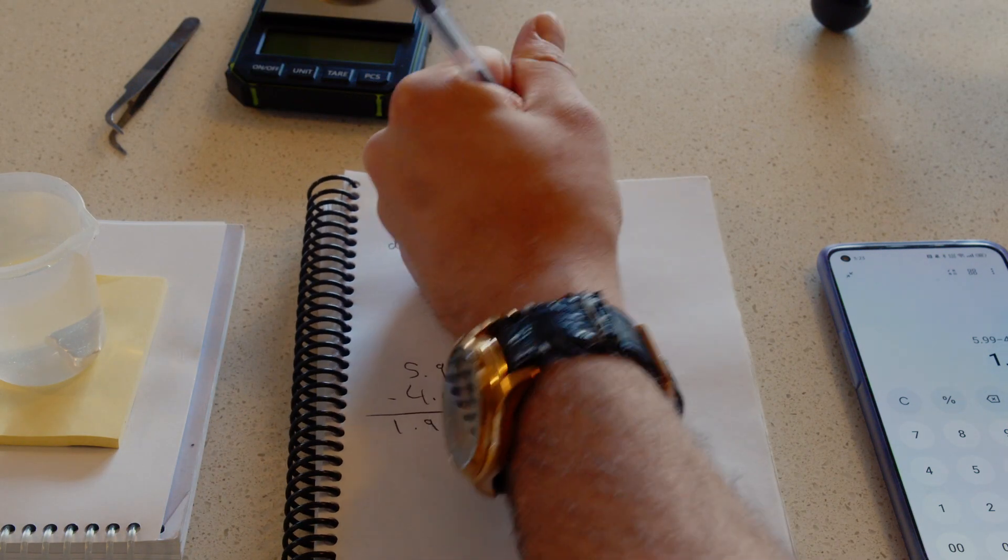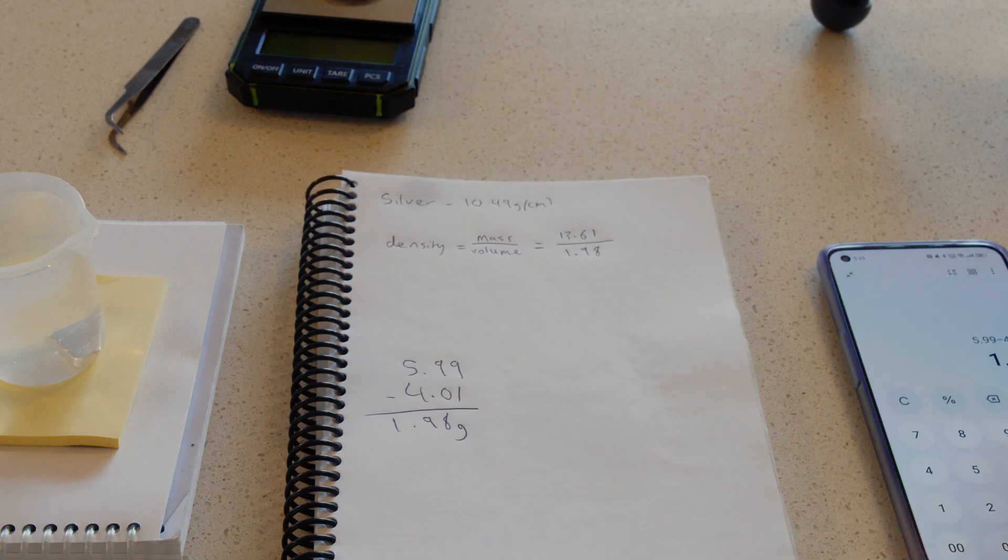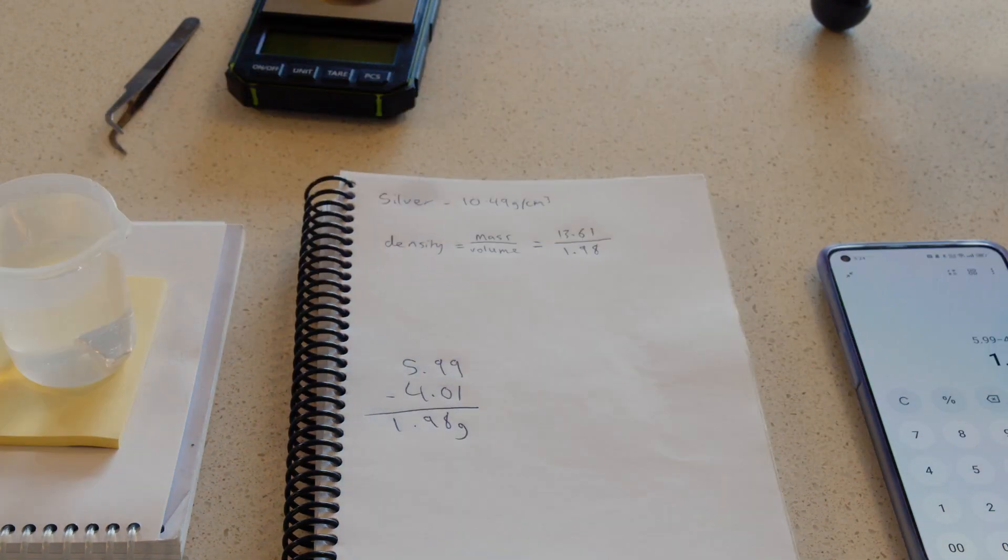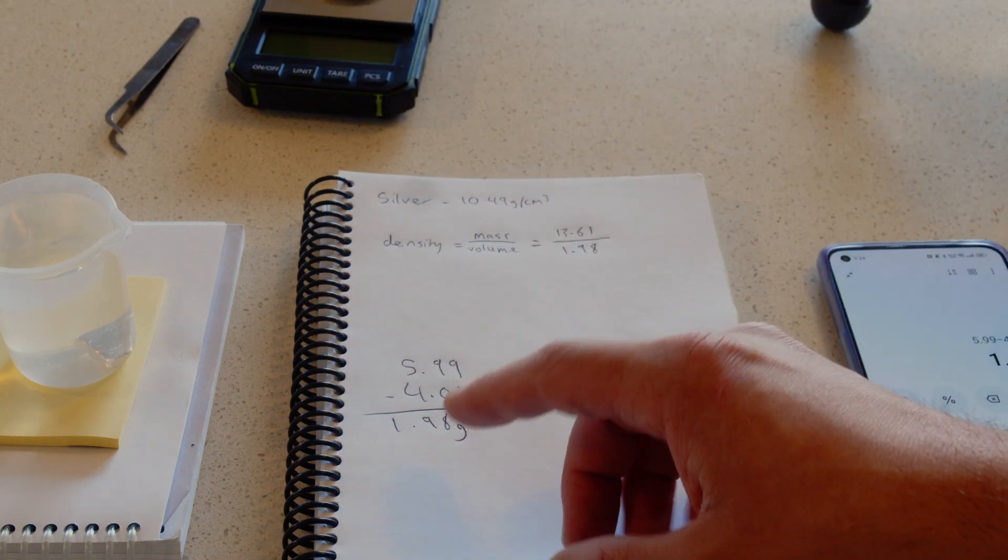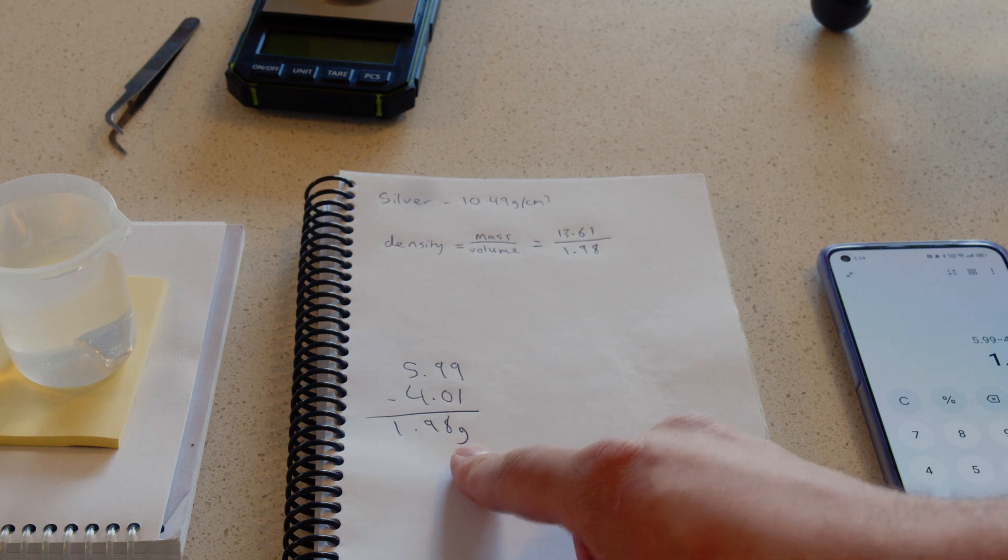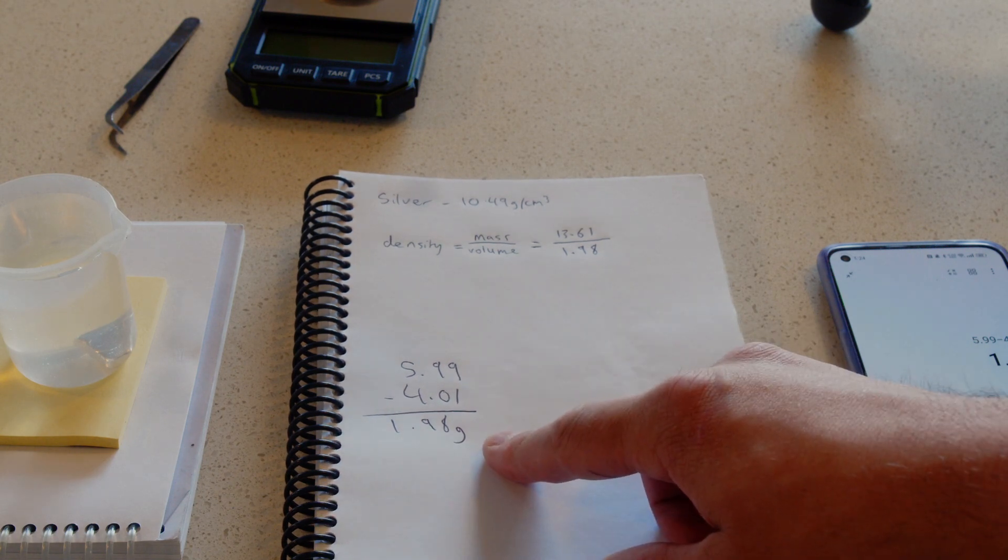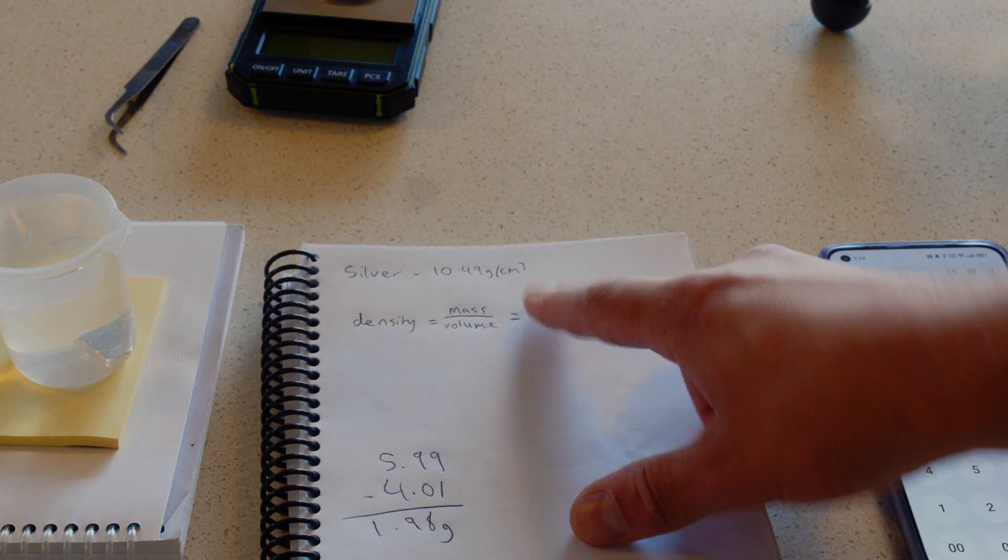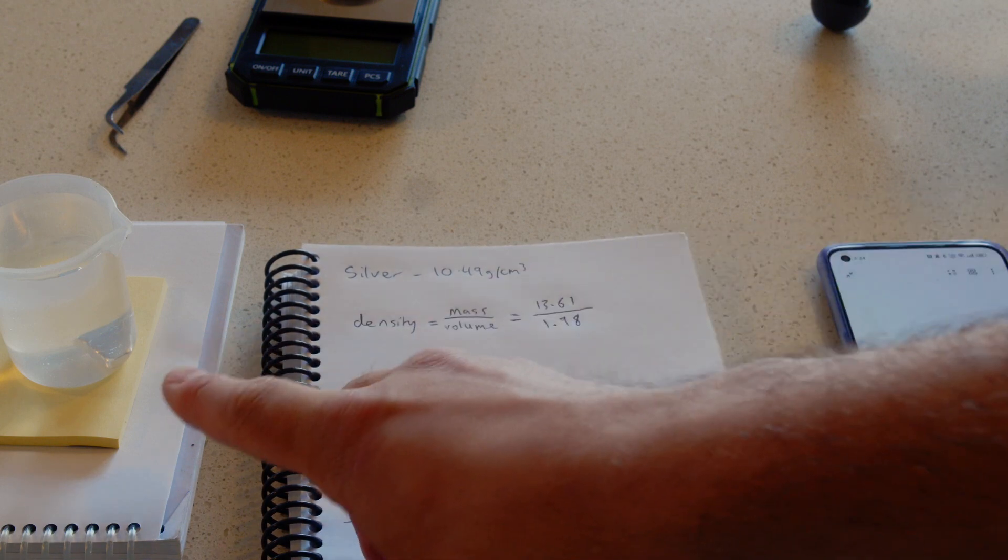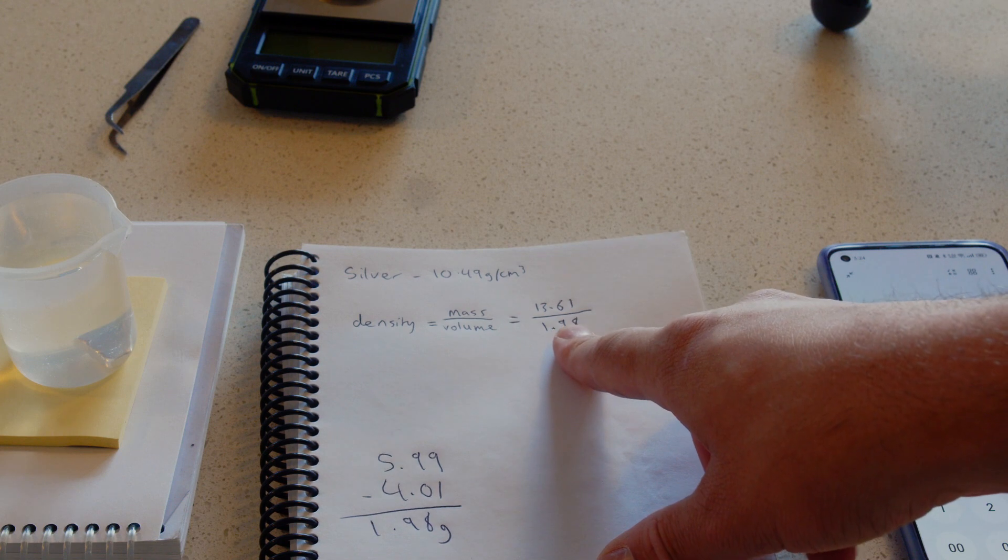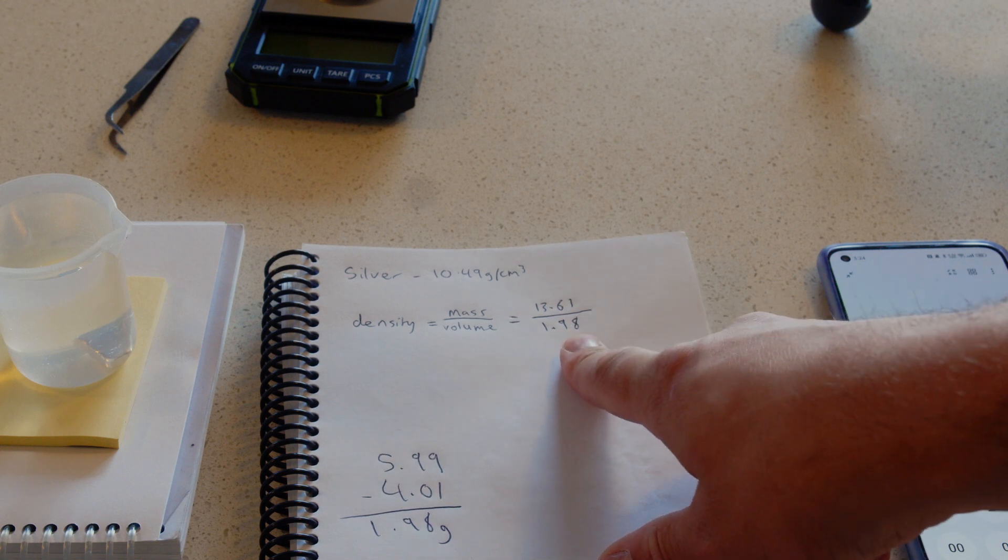That's the number I need for 1.98 cubic centimeters. Water at 1 cubic centimeter is 1 gram. So this silver displaces 1.98 grams or almost 2 milliliters of water. That's how I get the volume by displacing water. Now I've got 13.61 divided by 1.98.